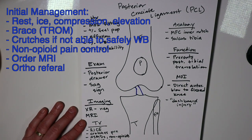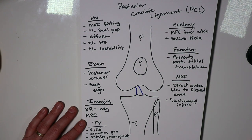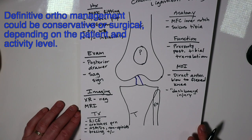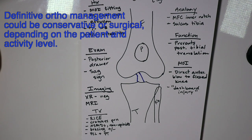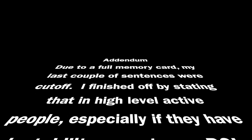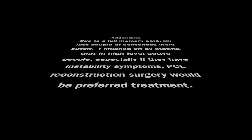If you are in the definitive care role, even with complete PCL tears in certain populations you can treat conservatively with PCL bracing and physical therapy. Several high-level athletes have sustained PCL tears and done just fine after thorough rehab using a specific PCL brace. There is some controversy about whether there will be expedited arthritic development in the long run, but conservative treatment is certainly an option. For high-level active people, especially with PCL instability symptoms, reconstruction will be the preferred treatment.